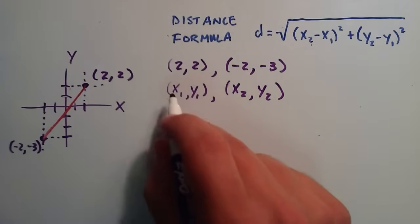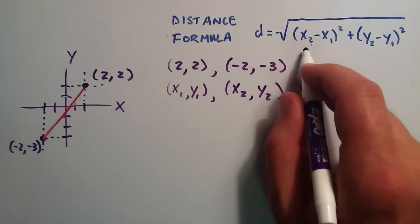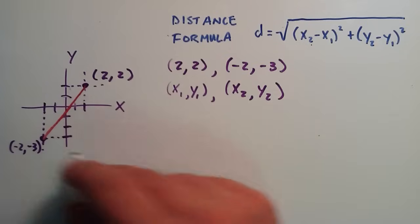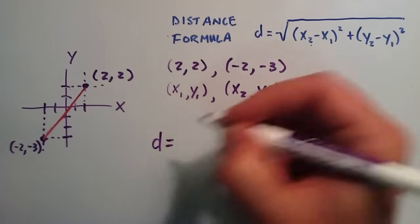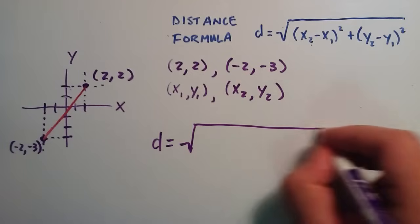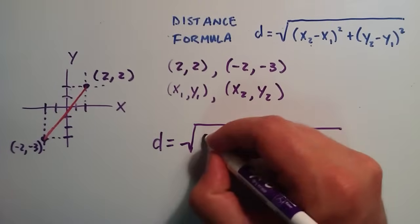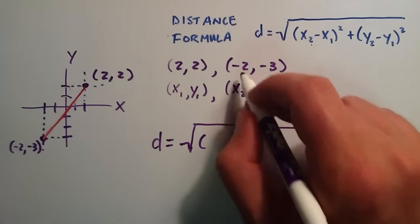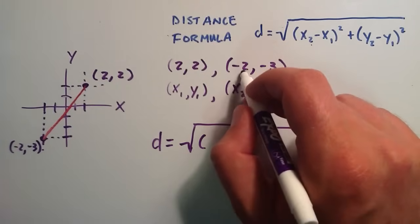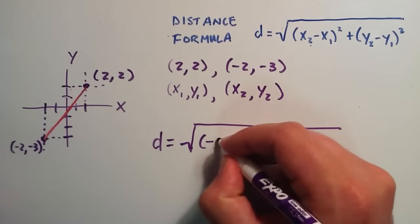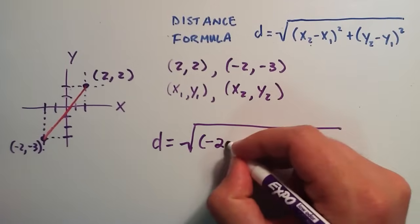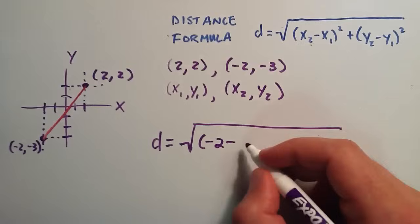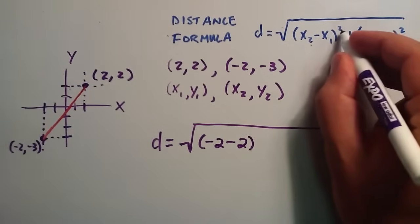And we simply plug in these numbers where they correspond in the distance formula. So the distance of this red line that I just drew is simply equal to the square root, and then we need x2 minus x1. So x2 is equal to negative 2, and then we're subtracting x1. So we subtract x1 corresponds to the left hand side of this point, which is a 2. And then that's squared.